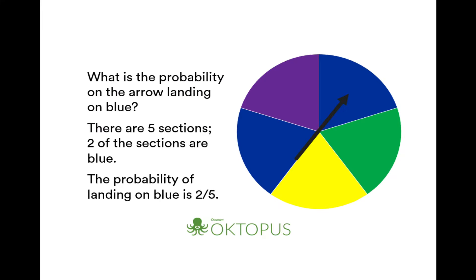Now let's look at a question on a spinning wheel. What is the probability of the arrow landing on blue? Looking at the spinner, there are five sections and two of them are blue. The probability of landing on blue is two out of five — or 100 divided by 5, multiplied by 2 — which is 40 percent. It's unlikely, and it's less than a half chance.